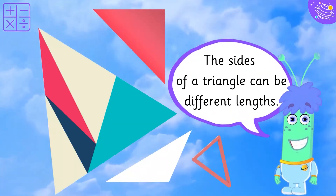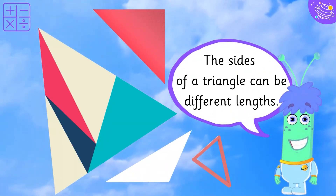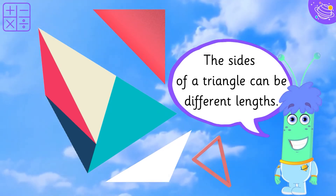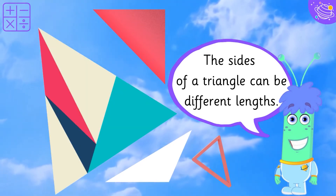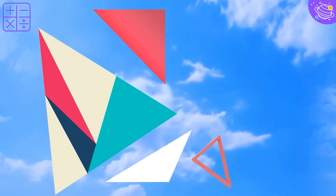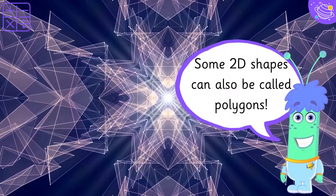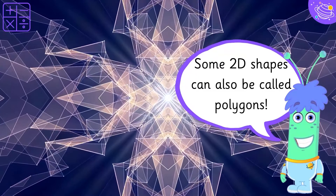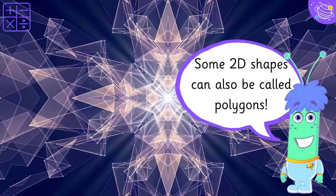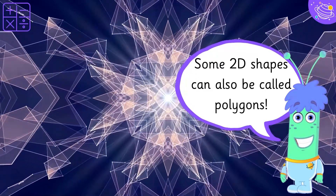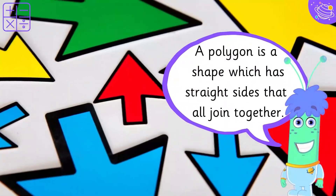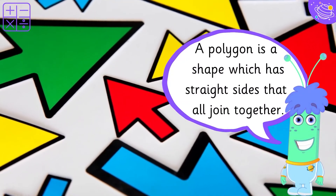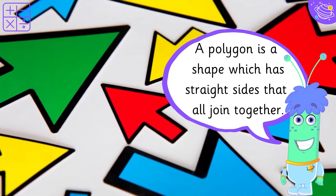The sides of a triangle can be different lengths. Some 2D shapes can also be called polygons. A polygon is a shape which has straight sides that all join together.